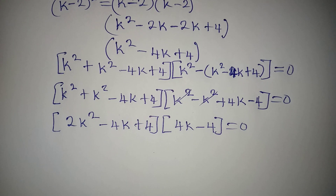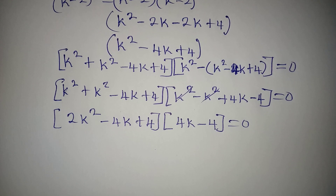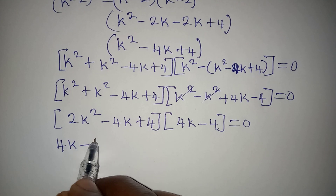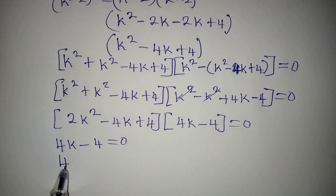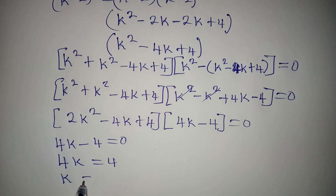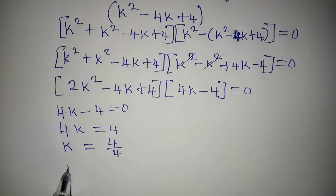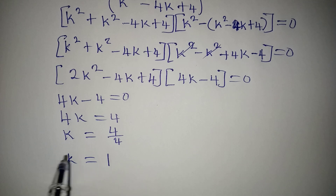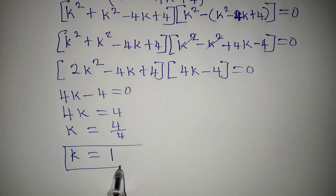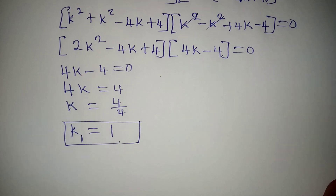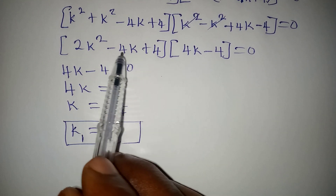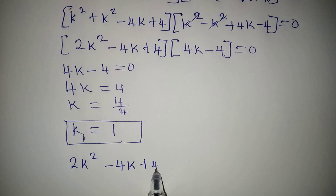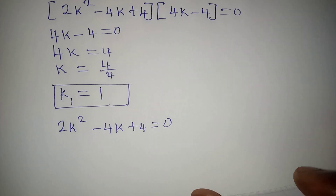Now we apply the zero product rule. I'll pick the linear expression first: 4k minus 4 equals zero, so 4k equals 4, meaning k equals 4 over 4, which is 1. We call this our first value, k1 equals 1. To get the other values of k we work with the quadratic expression 2k squared minus 4k plus 4 equals zero.